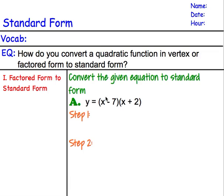So we're going to start off with factored form, and we have the problem y equals the quantity x minus 7 times the quantity x plus 2. The first thing we're going to do is we are going to distribute or FOIL. Good old FOIL method we have here.